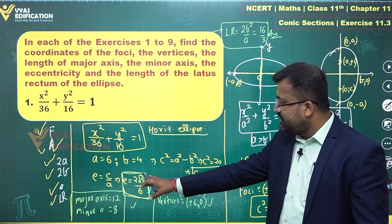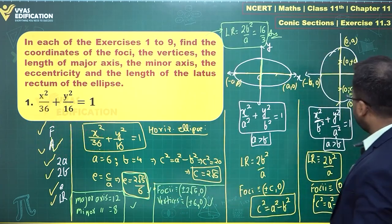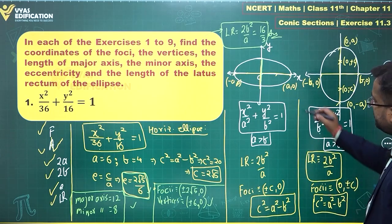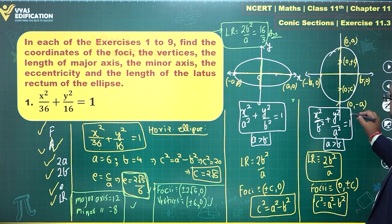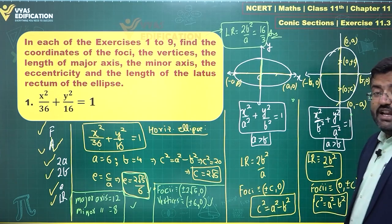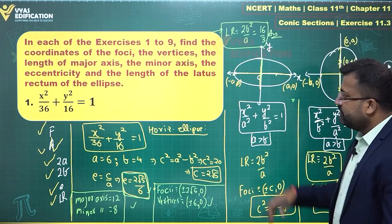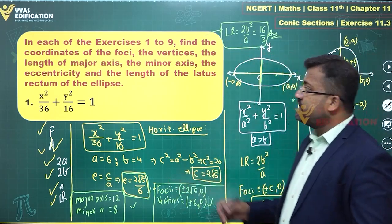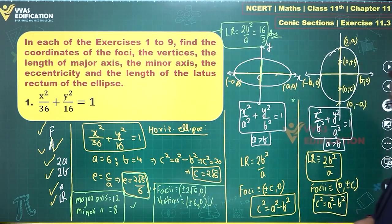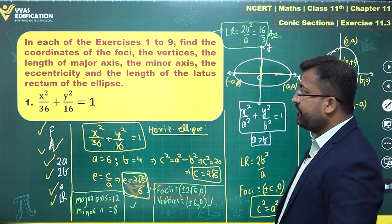That's the final solution for this complete question based on the two standard forms of ellipse. Here we required the horizontal ellipse, and in the next few questions we'll see the vertical ellipse as well. So that's the complete solution for this first question — I'll step aside so you can take a look, and now we'll move to the next question.